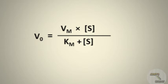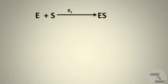For an enzyme-substrate reaction, the Michaelis-Menten equation describes the relation between the rate of the reaction and the substrate concentration. For the forward reaction where the enzyme and substrate react to form the enzyme-substrate complex, if we consider the rate constant as k1, we can write the rate equation accordingly.